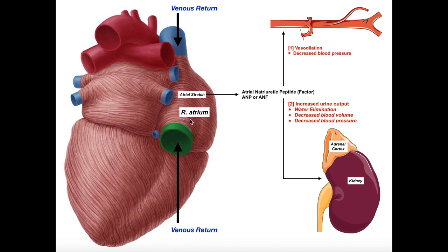Let's suppose we have a situation where blood volume is high. If blood volume is elevated, then blood pressure will also be elevated, because blood volume and pressure are directly proportional. If we have a high blood volume, then there's going to be more blood returning to the right atrium from both the superior and inferior parts of the body. More blood returning means a higher preload, so that's going to cause the wall of the atrium to stretch. Technically it will be both left and right, but this hormone is only released from the right atrium. So whenever the right atrium is stretched because there's increased blood returning to it, we get the release of atrial natriuretic peptide.